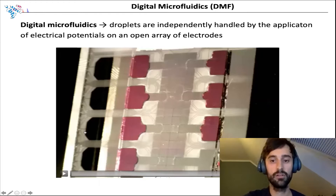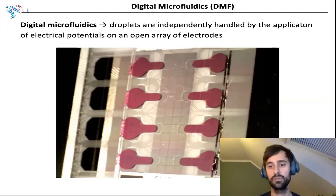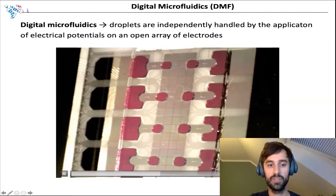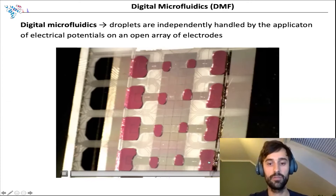As you will see in this video, where we used colored liquid, by DMF we can control droplets on an electrode array by the application of electric potentials. This allows us to load samples onto the so-called DMF chip and to dispense droplets, move them around, and if we want to, also merge them or subsequently mix them. For proteomics, that means we can step-by-step add different reactions for sample prep and mix them with our sample without any pipetting.